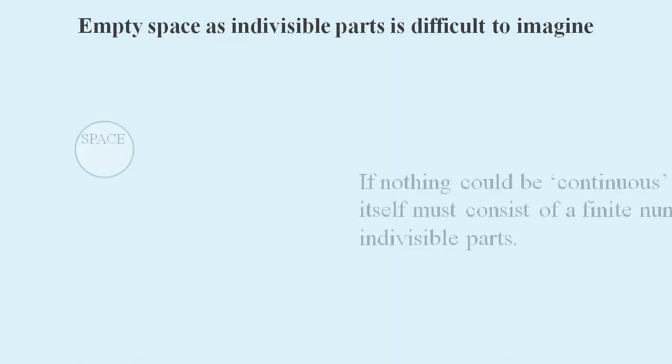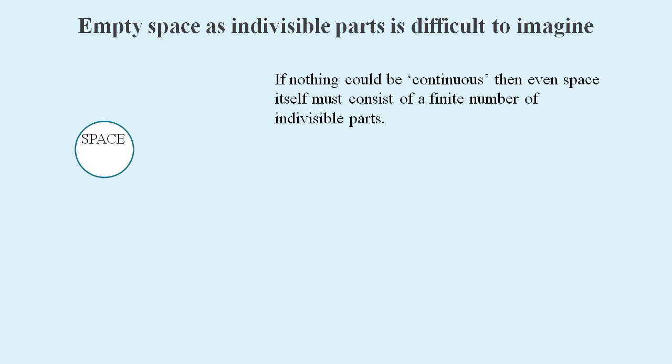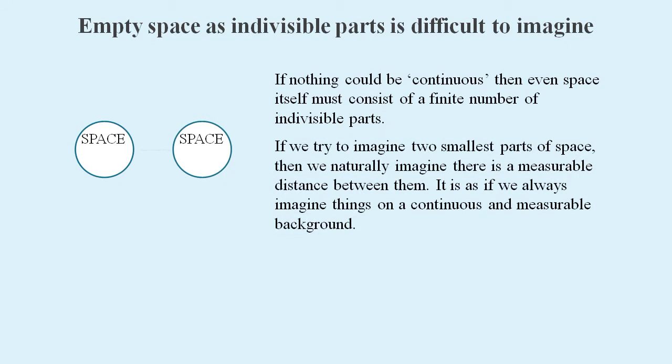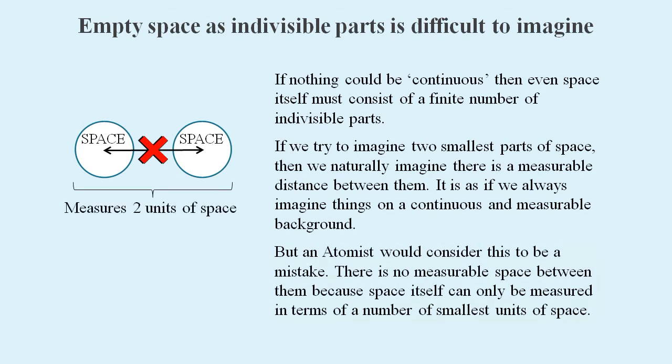It's very difficult to imagine empty space as consisting of indivisible parts, because we naturally imagine there's a measurable distance between them. But the distance between two parts of space must be measured in terms of parts of space. So the measurement could be the smallest number of spaces we can travel through to get from one to the other.